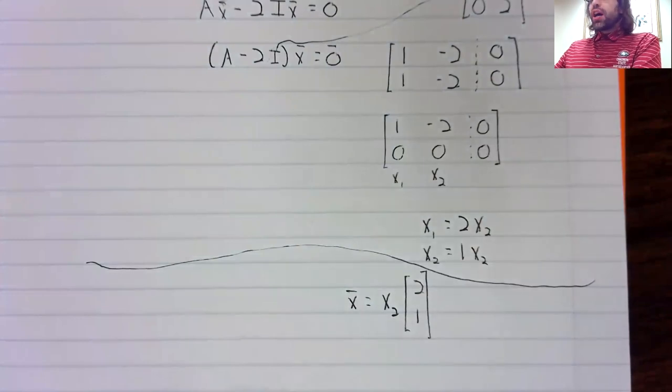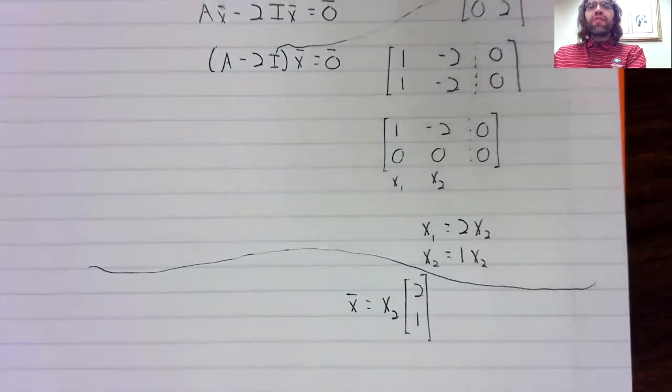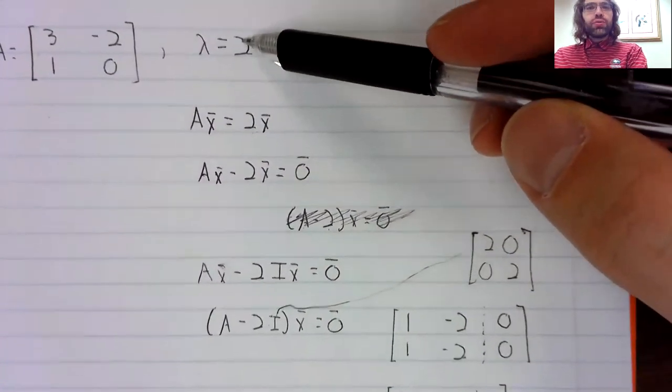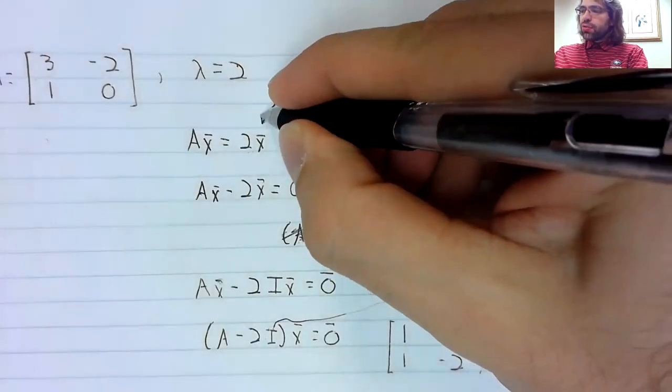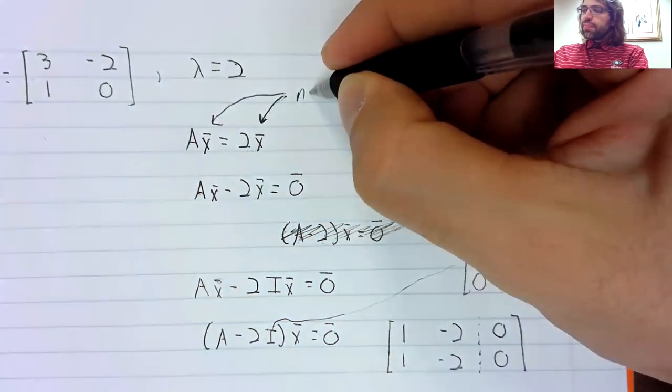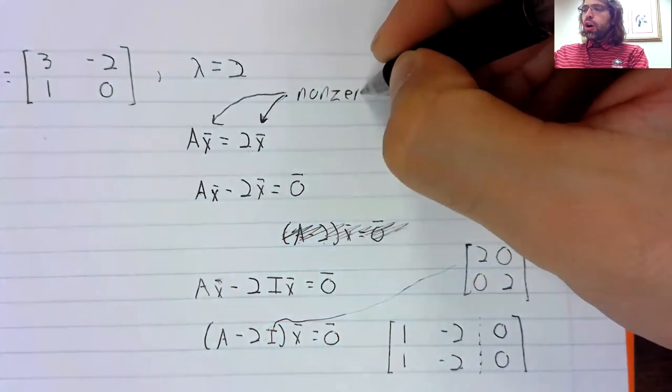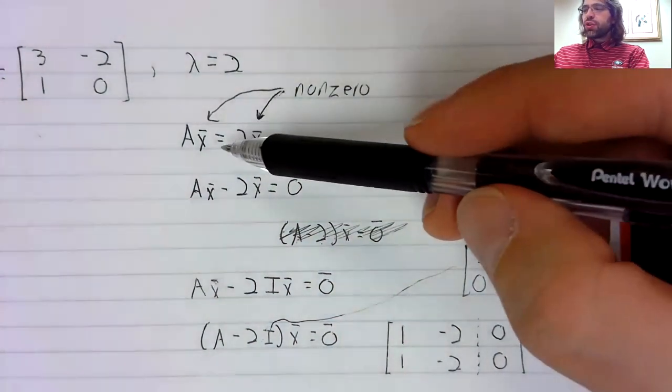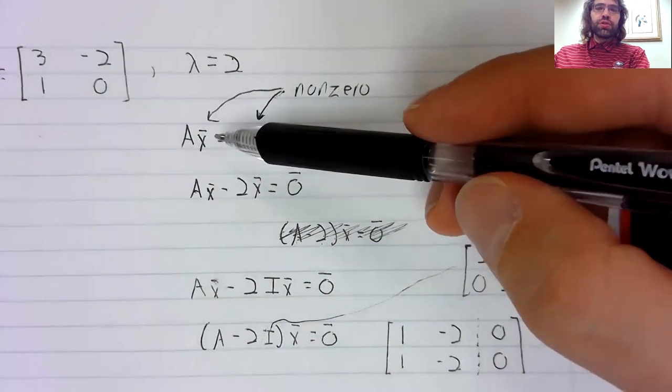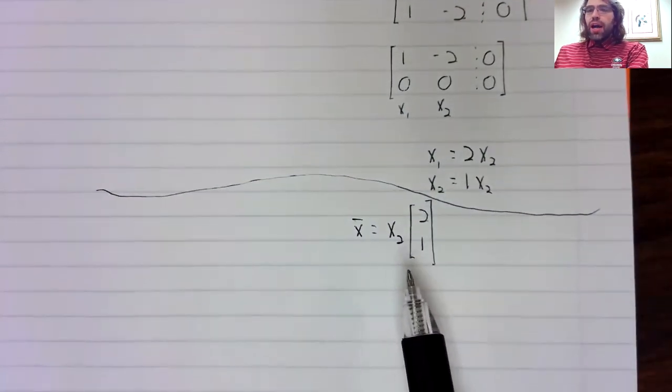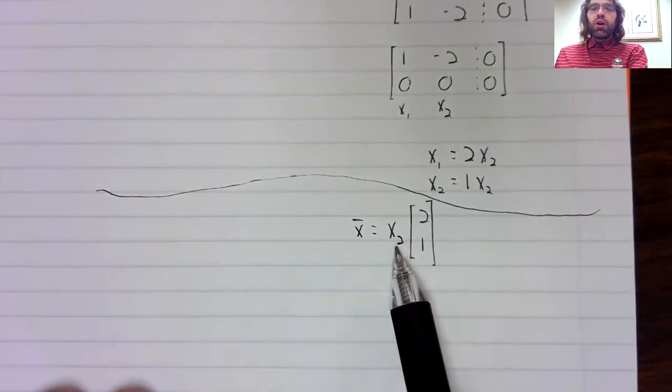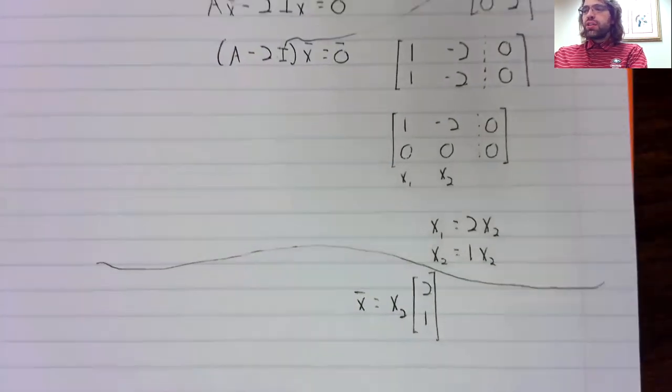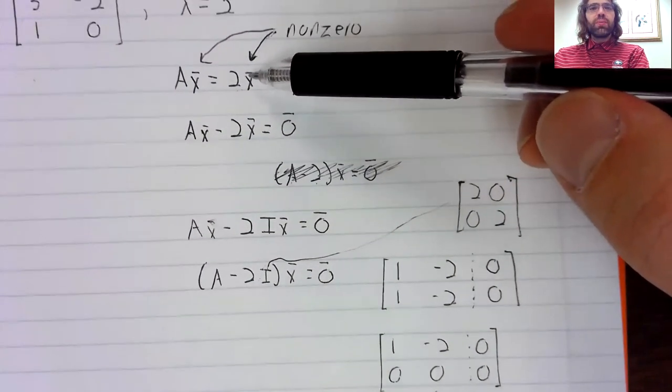So what have we done? First of all, we have verified that two is an eigenvalue. Two is an eigenvalue if and only if there are non-zero vectors that make this equality true, and there are. If you let x2 be any real number other than zero, you get a non-trivial solution to this equation.